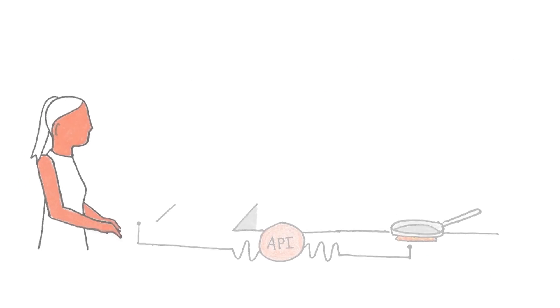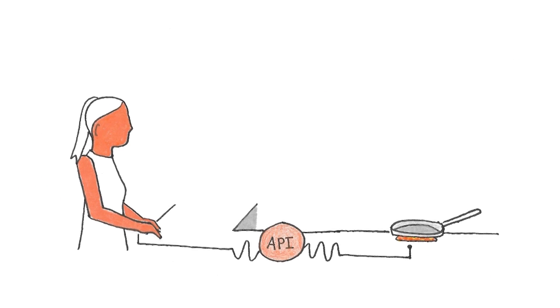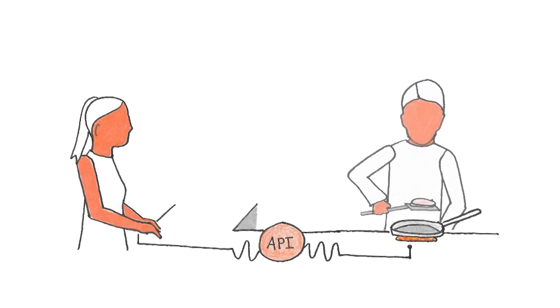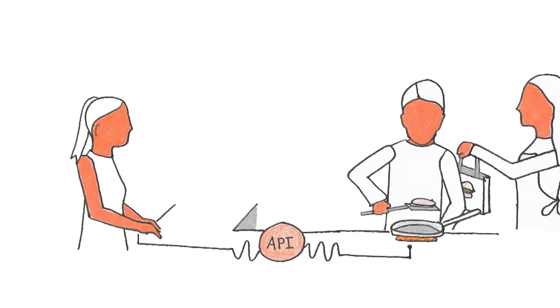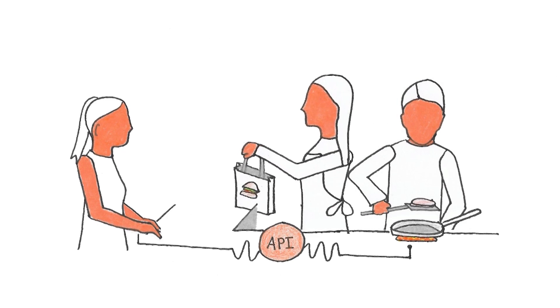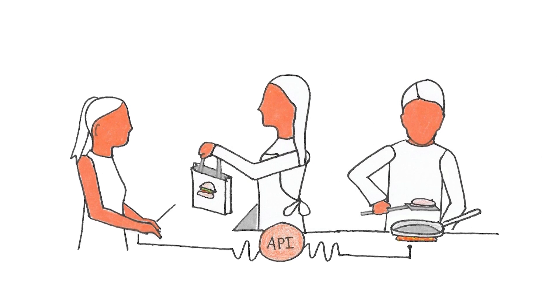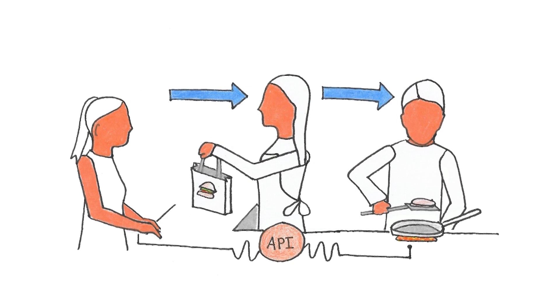It helps to compare an API to a messenger, like this vendor behind the counter. She needs to get the burger from the chef and then bring it to the customer. The API receives a request, collects and processes a response, and then returns with that response.